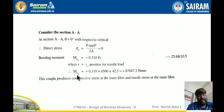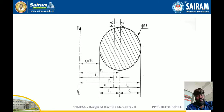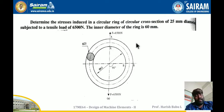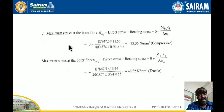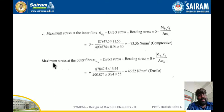MB at section A equals 87847.5 N·mm. This bending moment produces compressive stress at the inner fiber and tensile stress at the outer fiber. The maximum stress at the inner fiber Sigma_RI_A equals direct stress plus bending stress: 0 plus MB·CI divided by (A·e·RI), giving minus 73.36 N/mm² — compressive. For the outer fiber, direct stress is 0 and bending gives MB·C0 divided by (A·e·R0), giving 46.52 N/mm² — tensile.